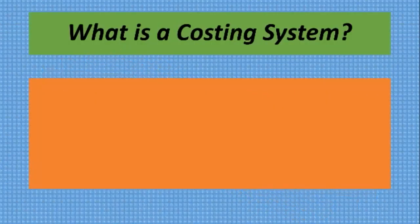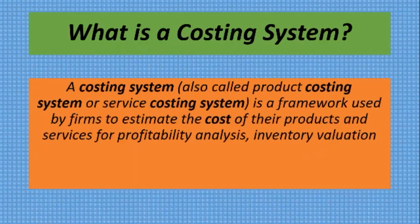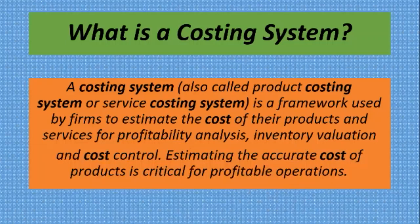First, we need to know what a costing system is. A costing system, also called a product costing system or service costing system, is a framework used by firms to estimate the cost of their products and services for profitability analysis, inventory valuation, and cost control. Estimating the accurate cost of products is critical for profitable operations.